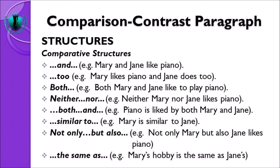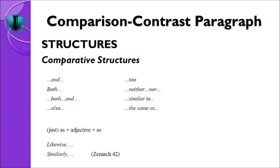Secara umum, comparative structures dalam paragraf comparison menggunakan kosa kata: and, both, both and, also, to, neither nor, similar to, the same as. Kita juga bisa menggunakan just as plus adjective plus as — ini menggunakan kata sifat. Dan terakhir, likewise dan similarly — untuk menyambung dua kalimat. Jadi ada tiga cara penulisan: menggunakan noun, menggunakan adjective (just as...as), dan menggunakan likewise/similarly.